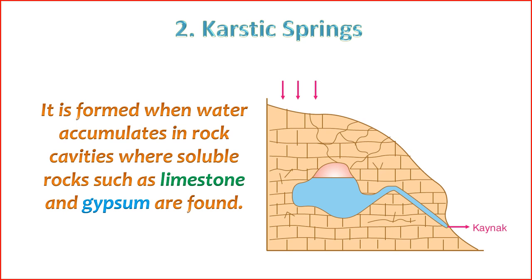10. Human Use — throughout history, humans have utilized karstic springs as water sources for drinking, agriculture, and industrial purposes. Some famous karstic springs are associated with cultural and historical significance. 11. Vulnerability to Pollution — karstic springs can be vulnerable to pollution because the rapid flow of water through conduits may facilitate the transport of contaminants from the surface to the aquifer. Protection measures are crucial to preserve the quality of water from karstic springs. Understanding the characteristics of karstic springs is essential for managing water resources in karst landscapes and ensuring their sustainable use while preserving the unique geological and ecological features of these environments.